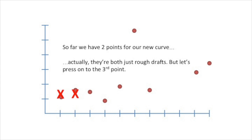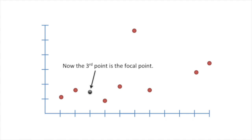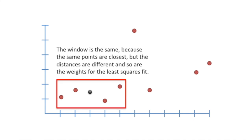So far we have two points on our new curve. Actually, they're both just rough drafts. But let's press on to the third point. Now the third point is the focal point. Again, the window is the same, because the same points are closest. But the distances are different, and so are the weights for the least squares fit. And here's our new point.